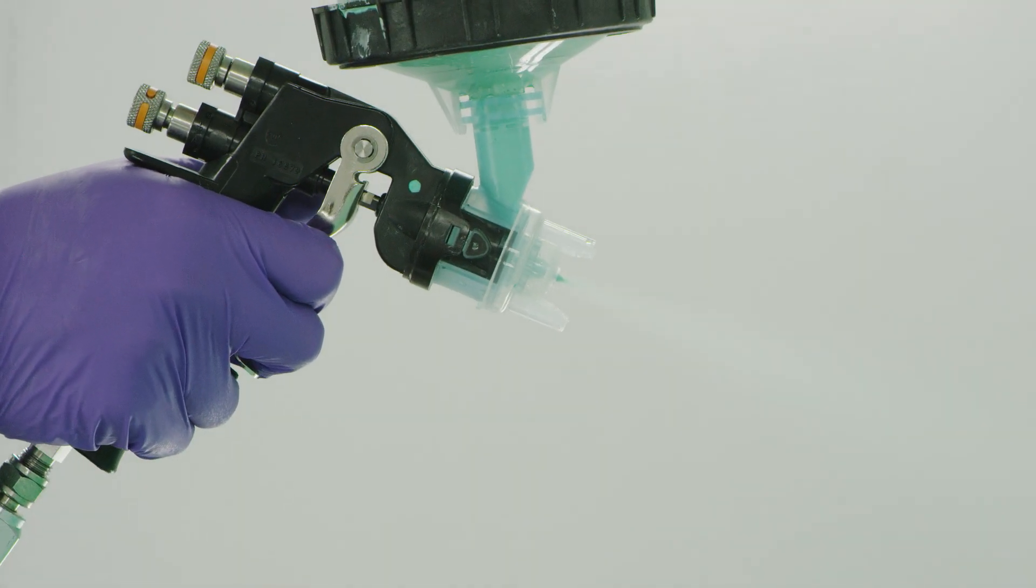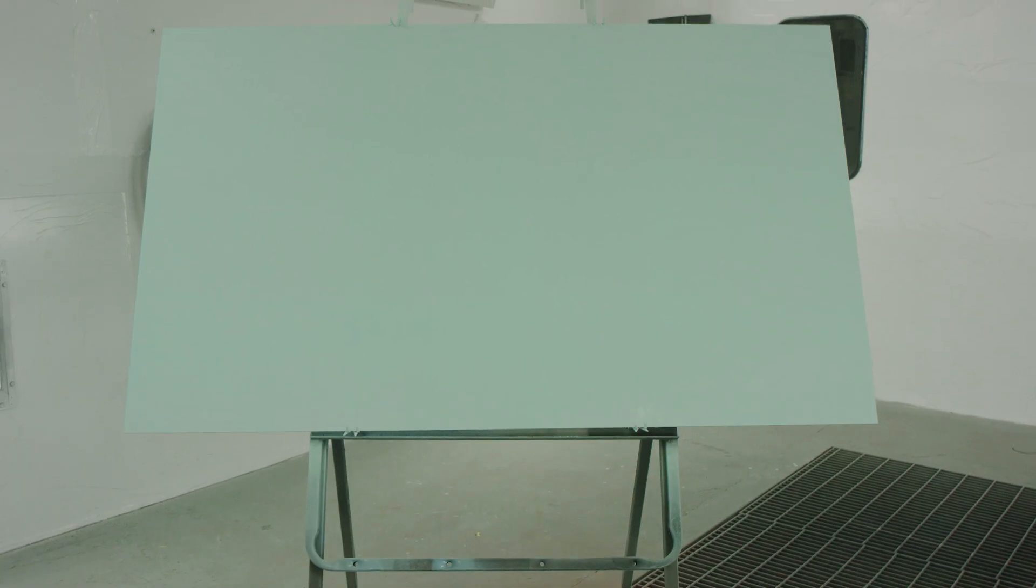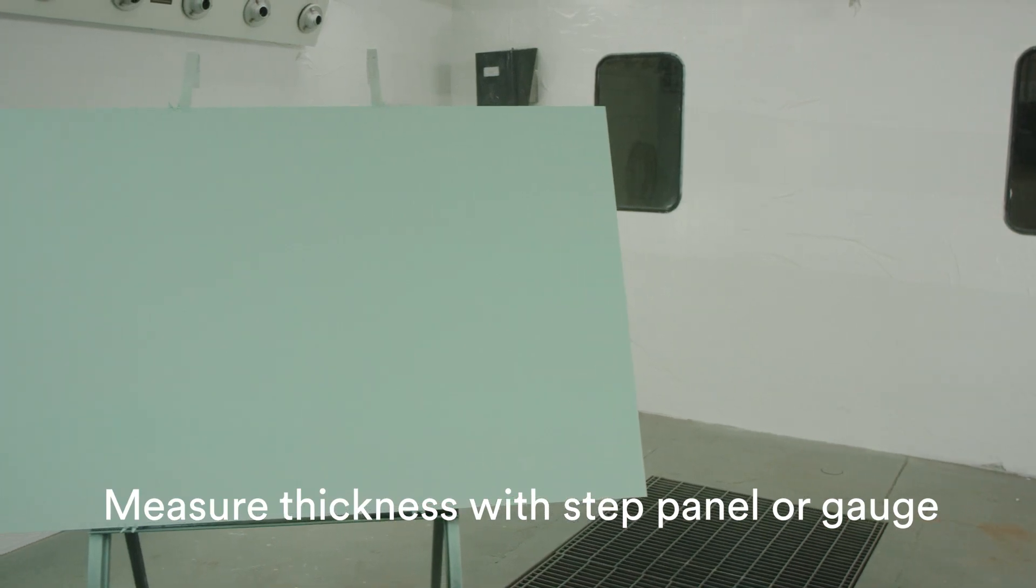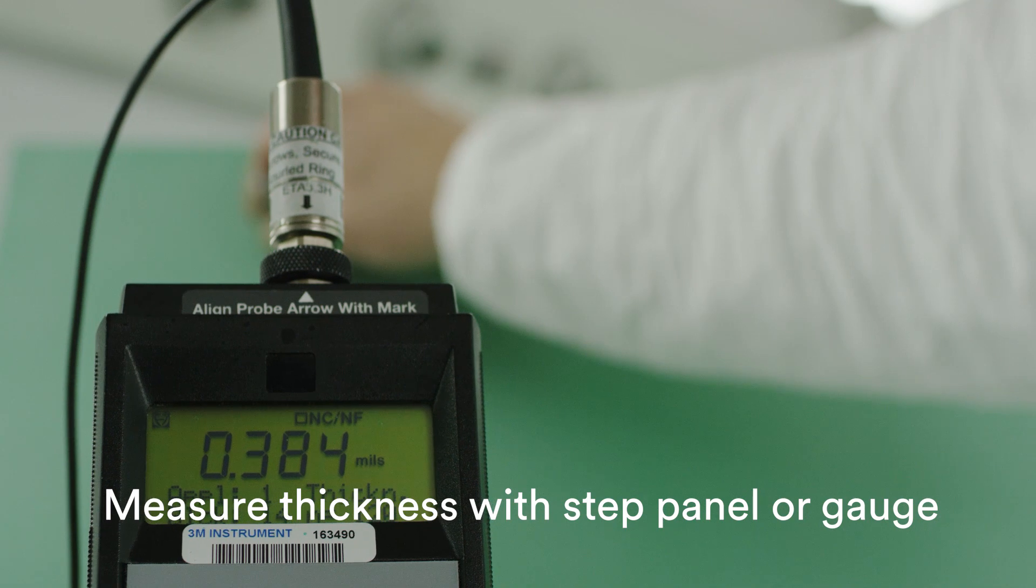Multiple passes will provide better uniformity of the primer, especially for large parts. To estimate the pre-baked primer thickness, compare the color of the part to a color standard, such as a step panel. Thickness can also be measured with a gauge after the primer has dried.